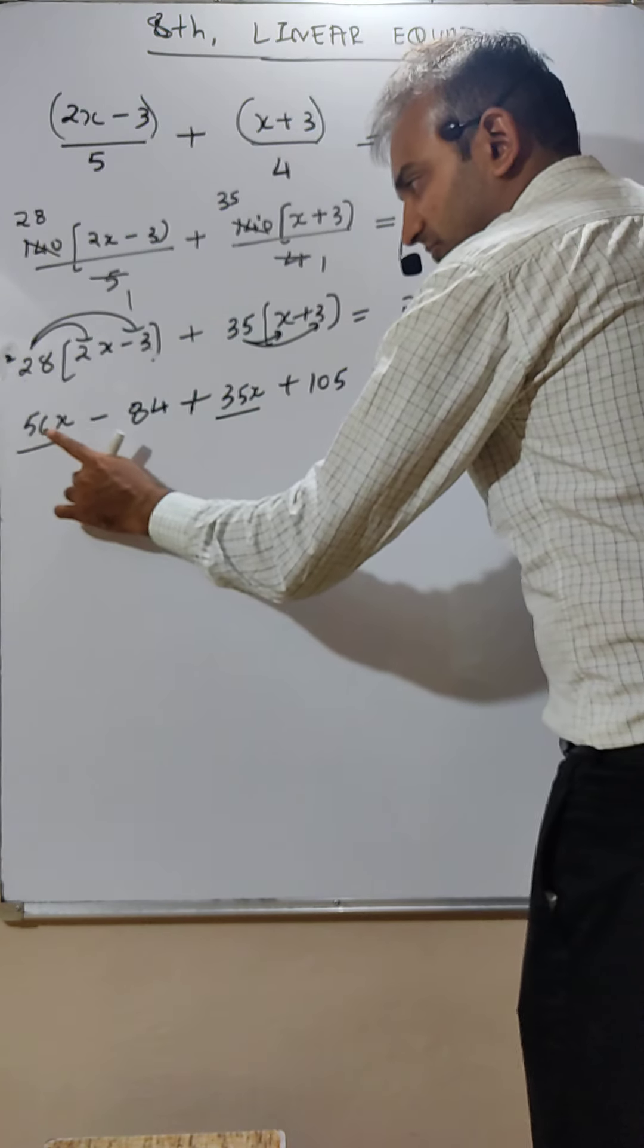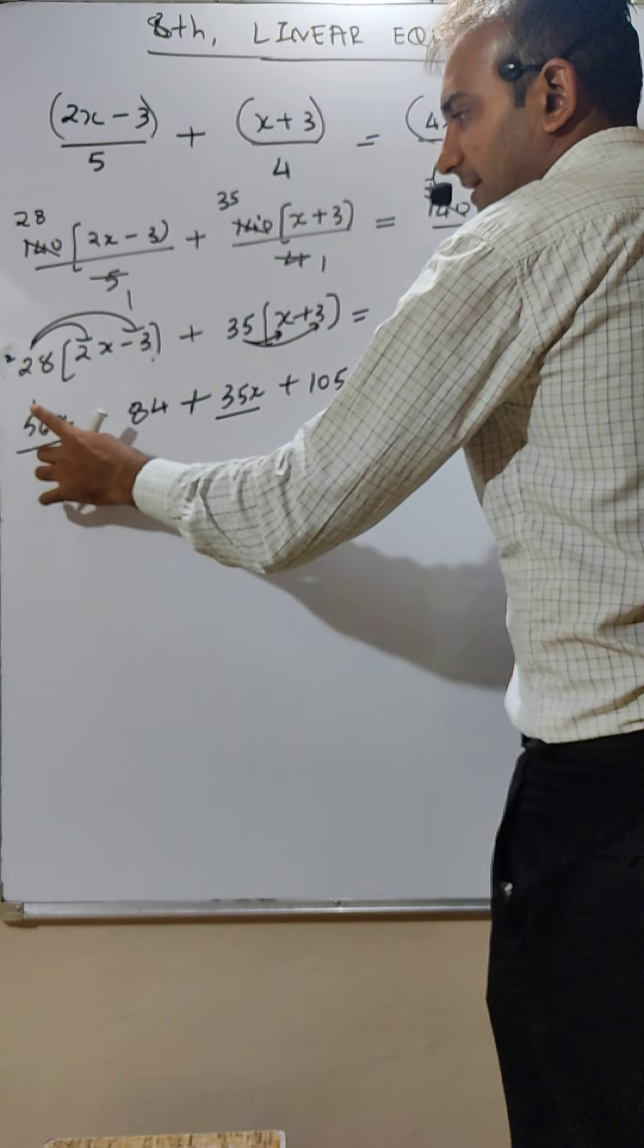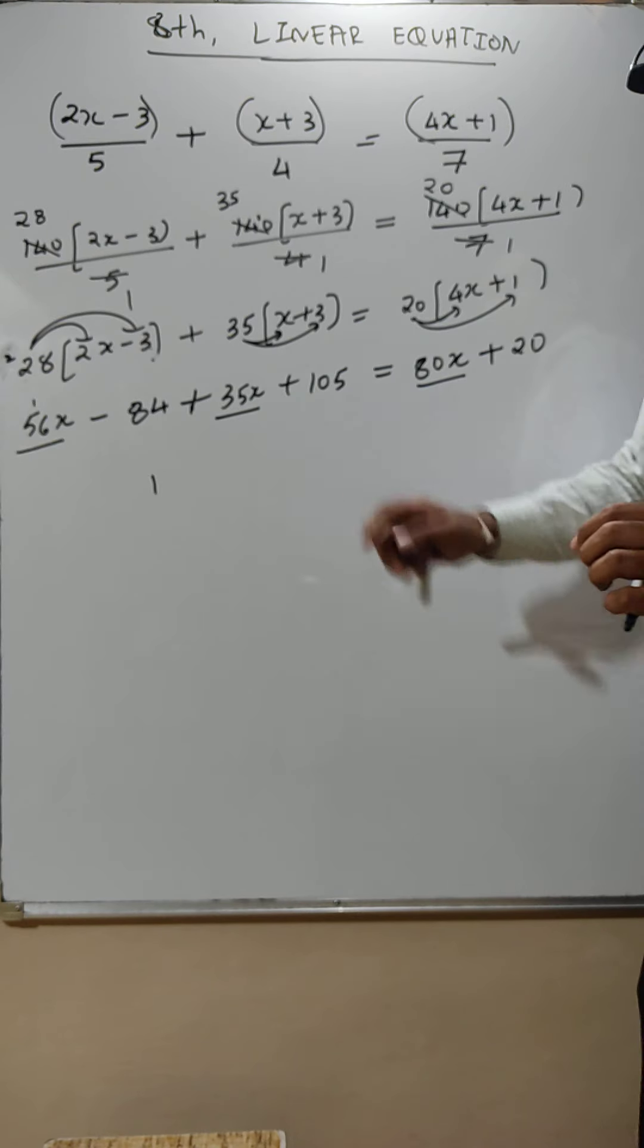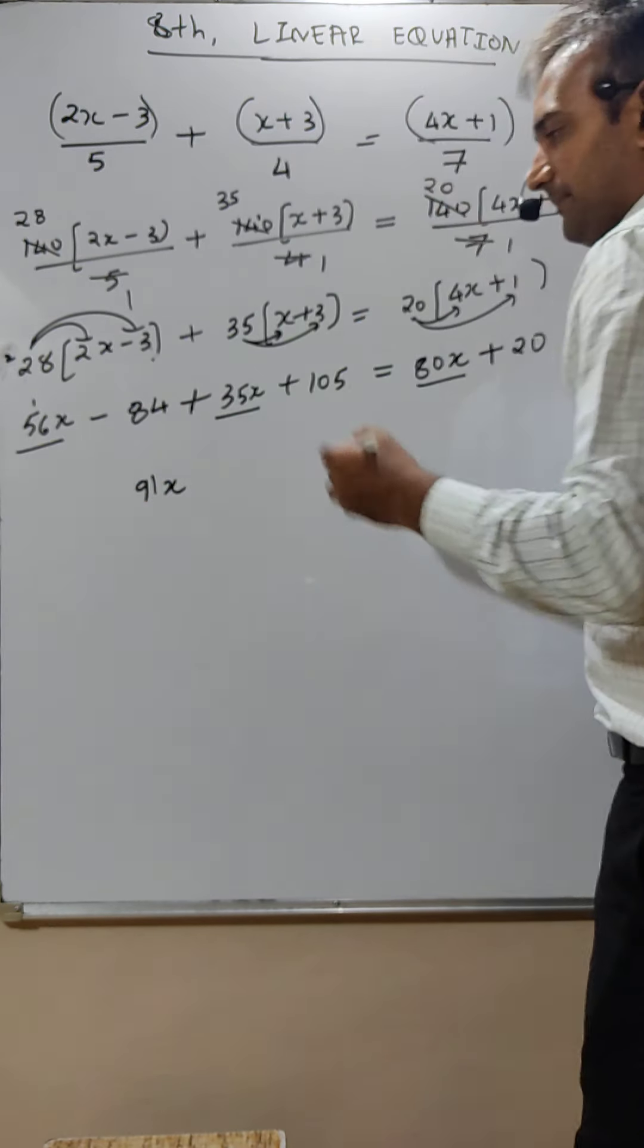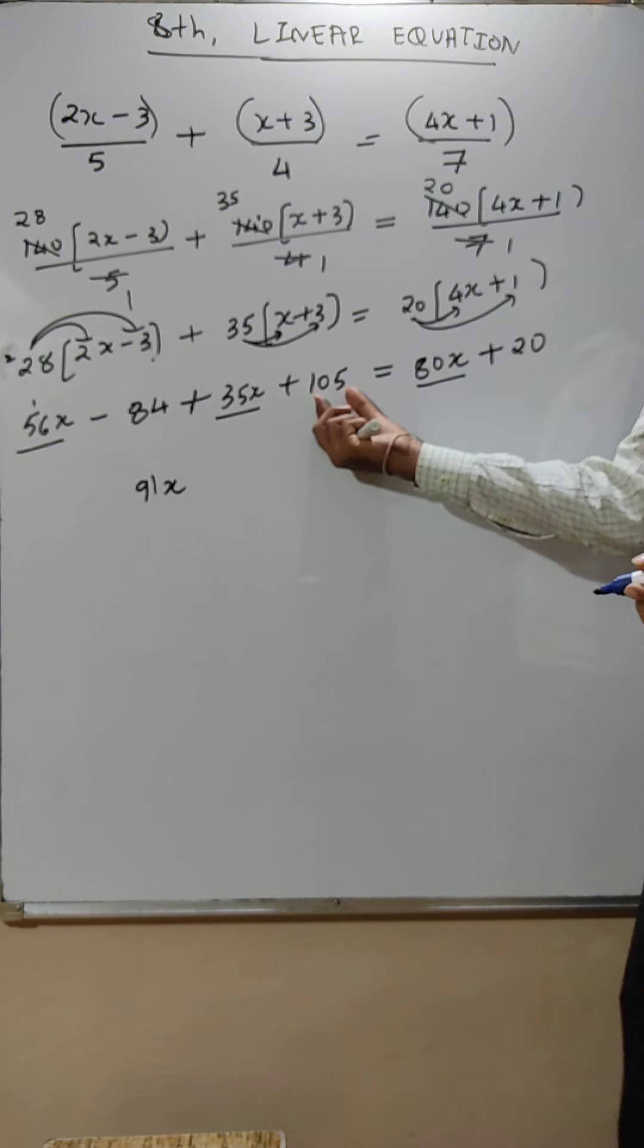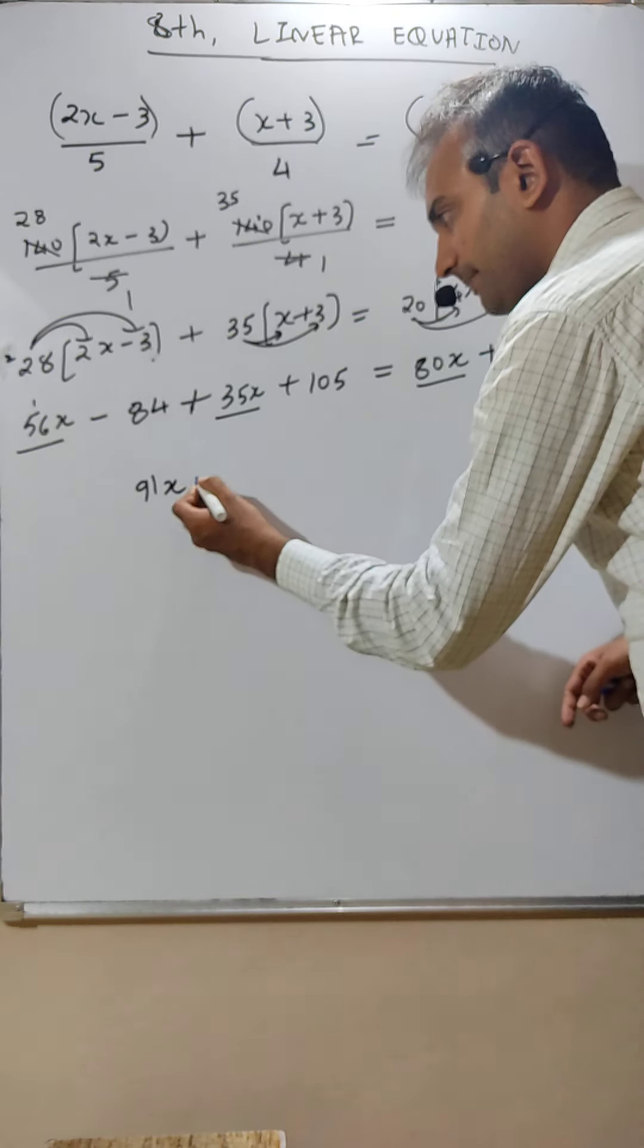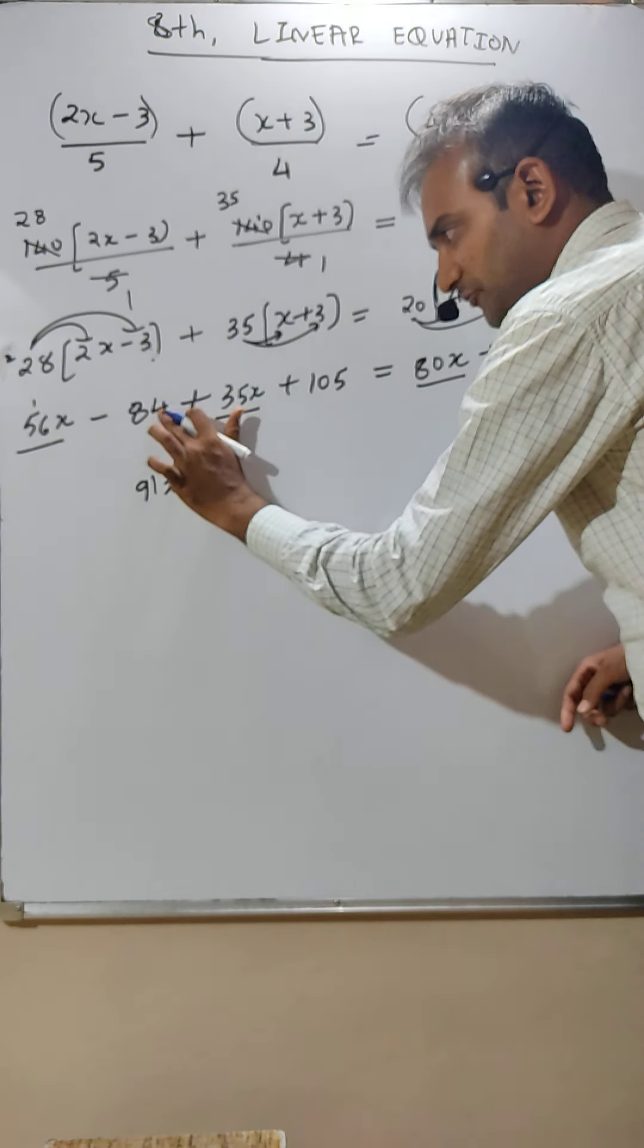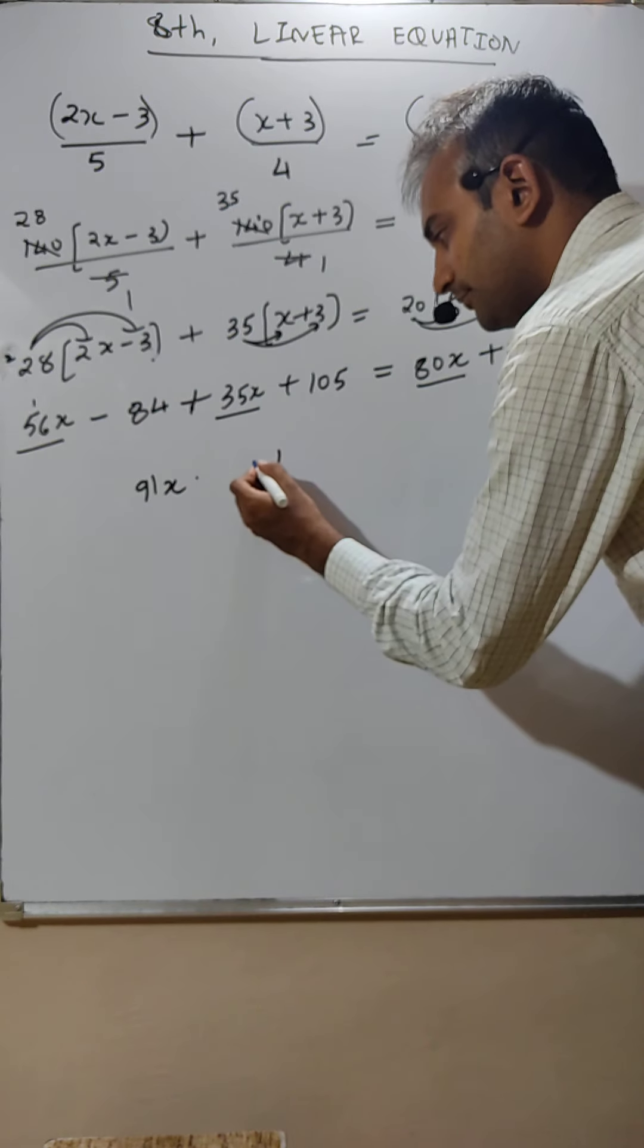6 plus 3, 91x. 105 minus 84, 5 minus 4 is 1, 10 minus 8 is 2, plus 21 is equal to 80x plus 20.